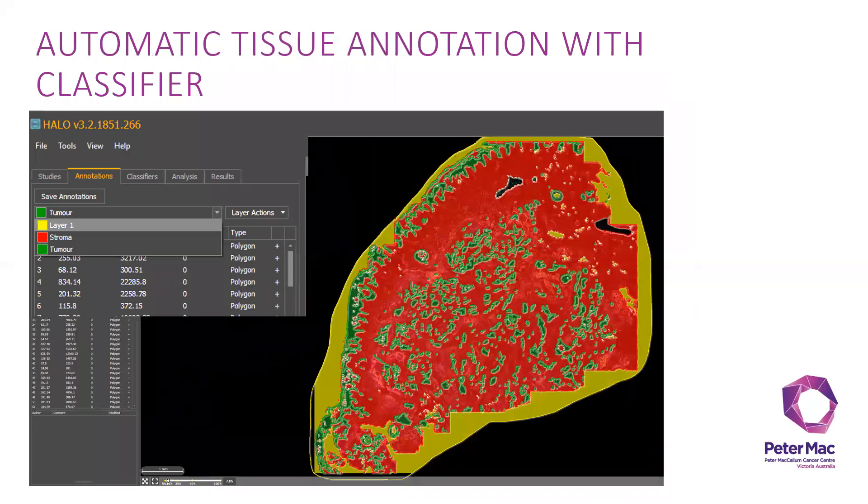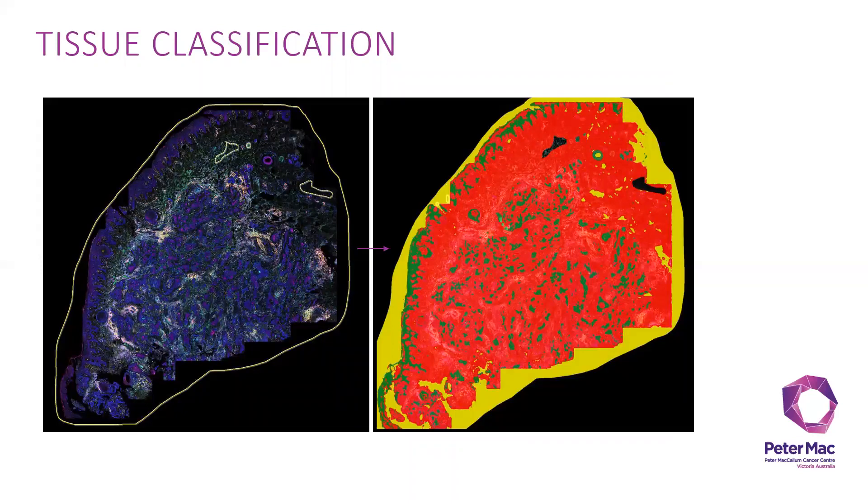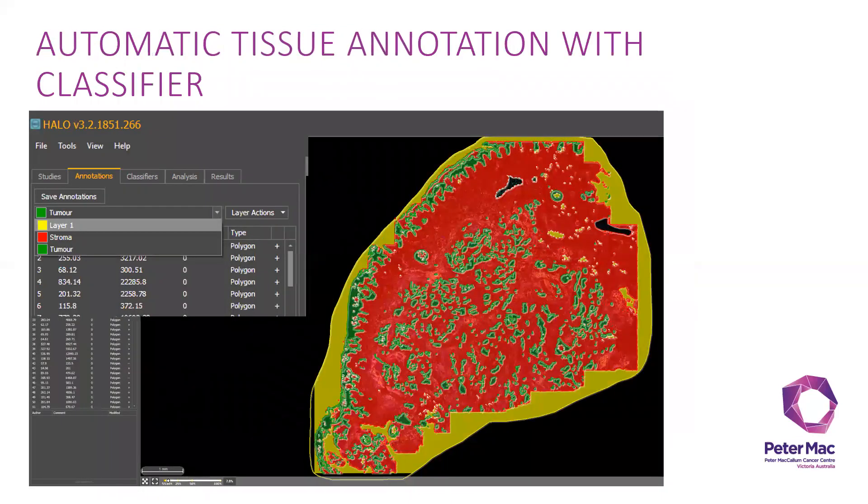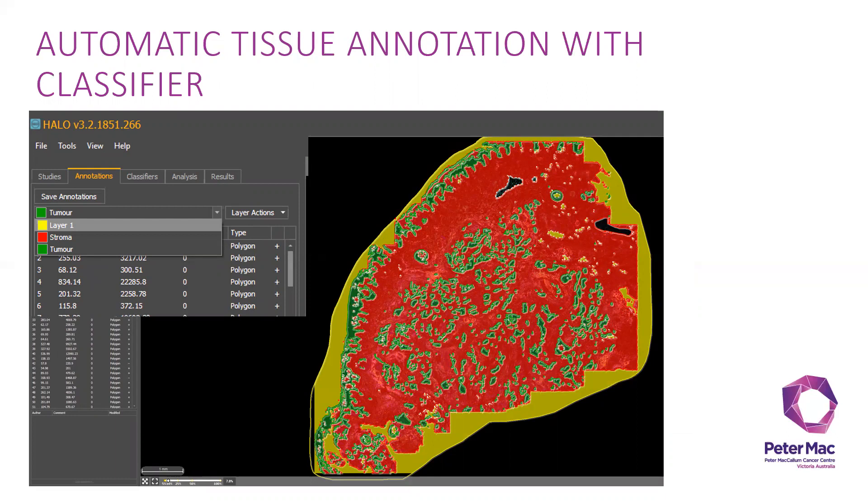From this step, you can then further use the automatic tissue annotation with classifier to actually turn the tumor and stroma into an annotation layer. This will come in handy when you are doing spatial analysis, which I will show later on during the presentation.